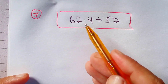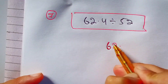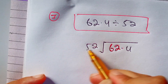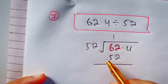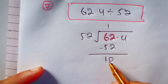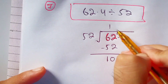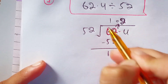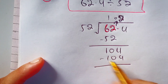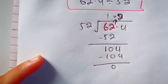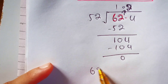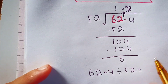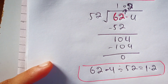Now here is another example: 62.4 divided by 52. 52 times 1 is 52. Subtract 52 from 62, the remainder is 10. Now 10 is less than 52, so we carry the decimal point to the quotient and bring down the 4 near 10 to make it 104. 2 times 52 is 104. Subtract 104 from 104, the remainder is 0. So we can say that 62.4 divided by 52 is equal to 1.2. This is our final answer.